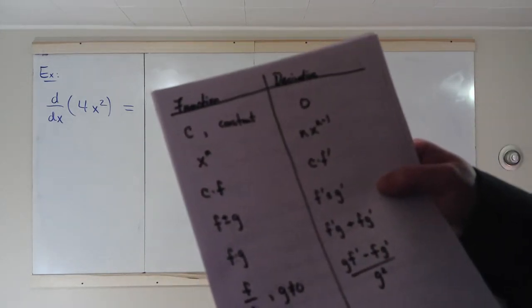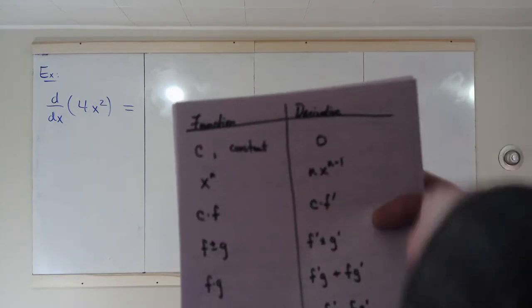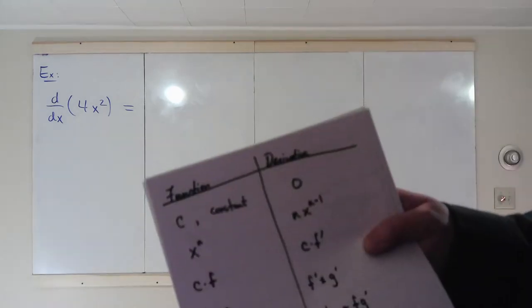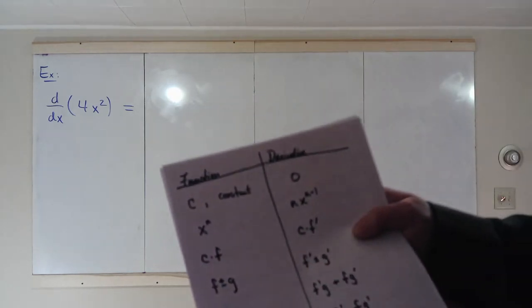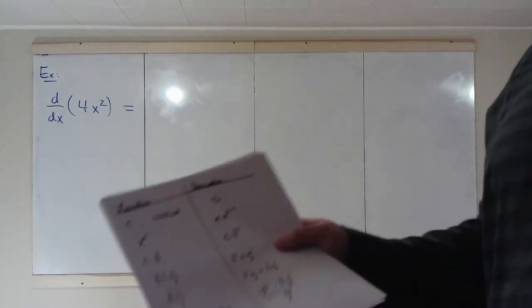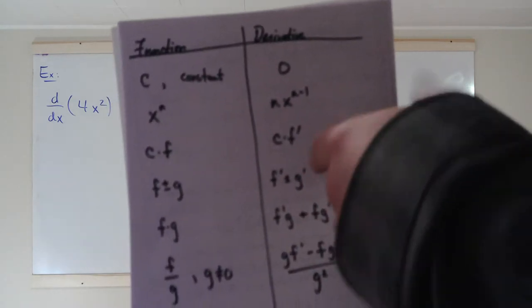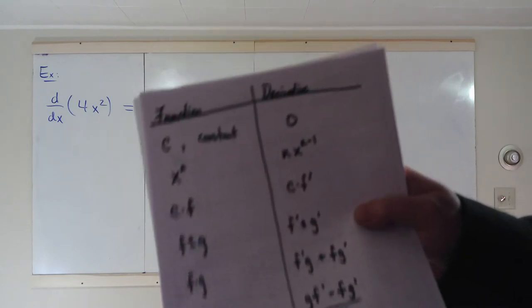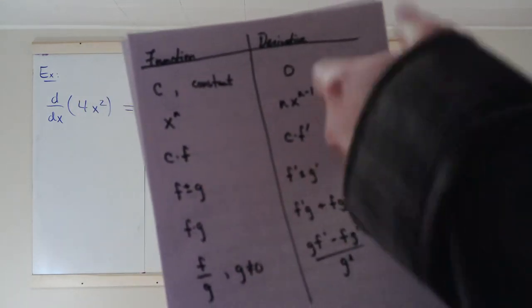Next, the derivative of a constant times a function: f and g are functions. The derivative of a constant times a function is the constant times the derivative of the function. If you want the derivative of a constant times a function, you carry the constant down and then take the derivative of the function. The next rules are the algebraic operations on functions: the derivative of f plus or minus g is f prime plus or minus g prime — positive goes with positive, negative goes with negative.